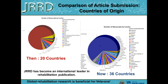So what does this mean for JRRD? In 2003 — the then — we had 20 different countries submitting to JRRD. Now in 2013 we have 36 different countries. JRRD has become an international leader in rehabilitation publication, in large part due to submissions from articles with authors from other countries. Global rehabilitation research that we publish is very beneficial to our veterans.